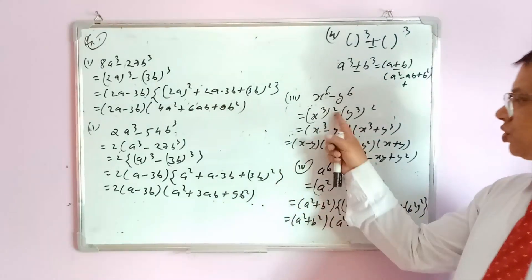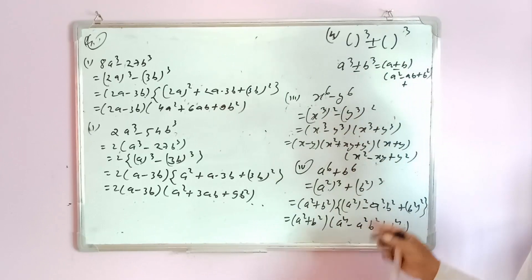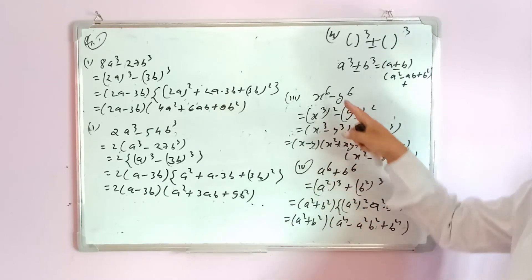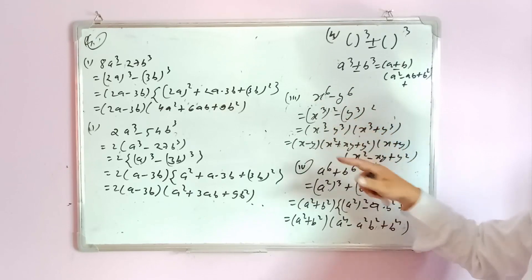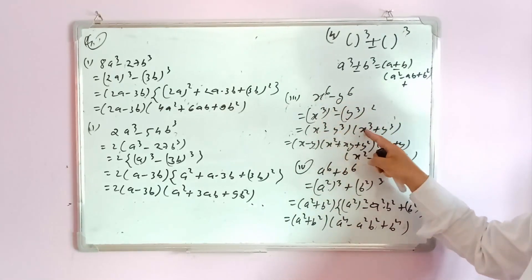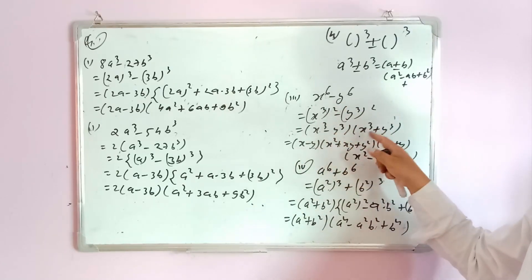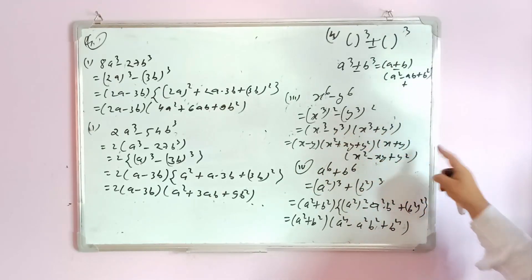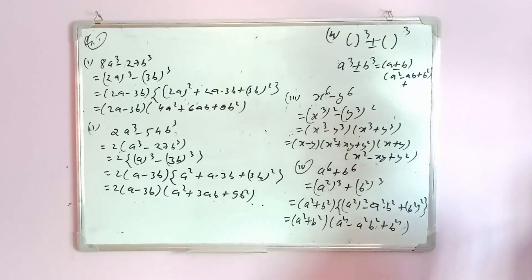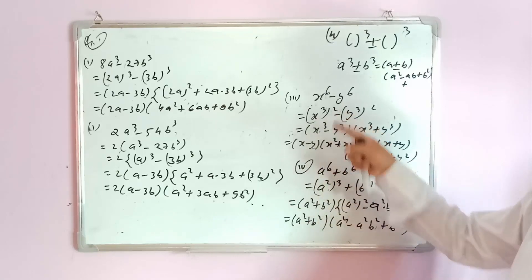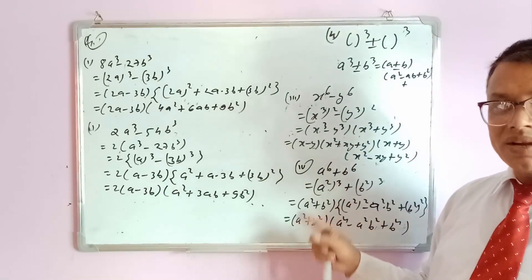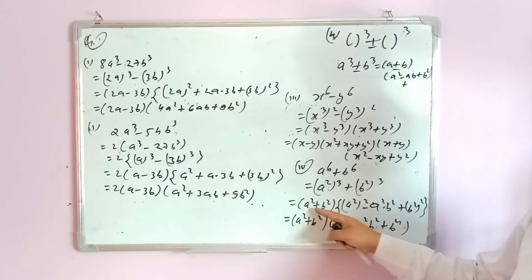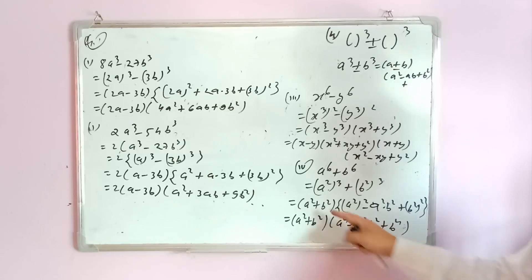For x⁶−y⁶, there are two methods. Method one: write as (x³)²−(y³)², apply a²−b² to get (x³−y³)(x³+y³), then apply cube formulas to each: (x−y)(x²+xy+y²)(x+y)(x²−xy+y²). For a⁶+b⁶, it is easier to write as (a²)³+(b²)³ and apply a³+b³ = (a+b)(a²−ab+b²), giving (a²+b²)(a⁴−a²b²+b⁴).